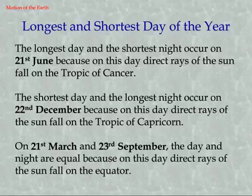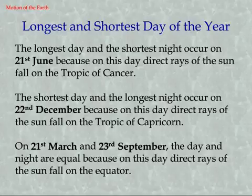On 21st March and 23rd September, the day and night are equal, because on these days direct rays of the Sun fall on the Equator.